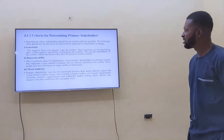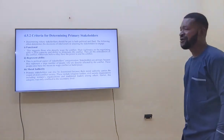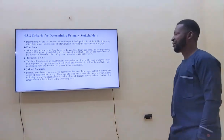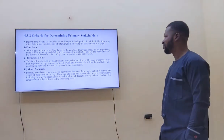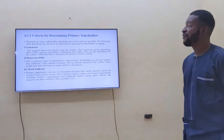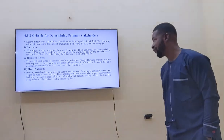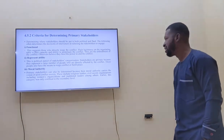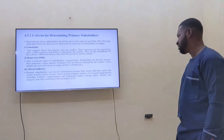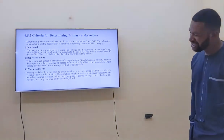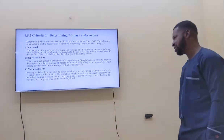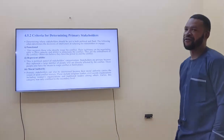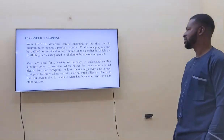To identify a primary stakeholder, there are things you have to look at. First, the functions — the role the person performs in the conflict. Second, the representability. Third, the moral authority — whether the person's presence in the conflict is truly justified.